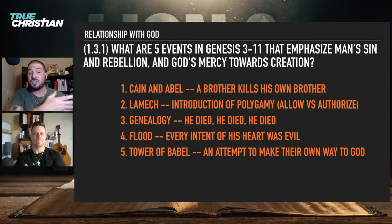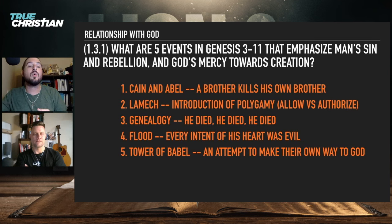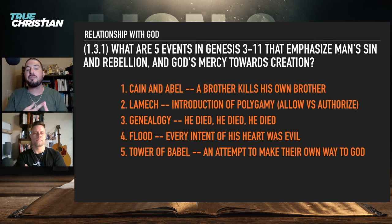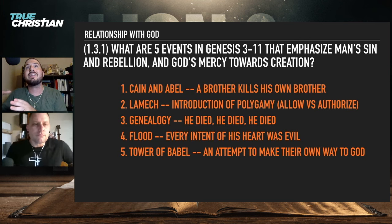What are the five events in Genesis 3 through 11 that emphasize man's sin and rebellion? We're on Genesis 11 now and about to read number five: the Tower of Babel. But first — Cain and Abel, a brother killing his brother; Lamech introducing polygamy against God's design; the genealogy showing death entering the picture; and the flood, where God says every intent of the heart was evil. The Tower of Babel is man trying to say 'I don't need God.'